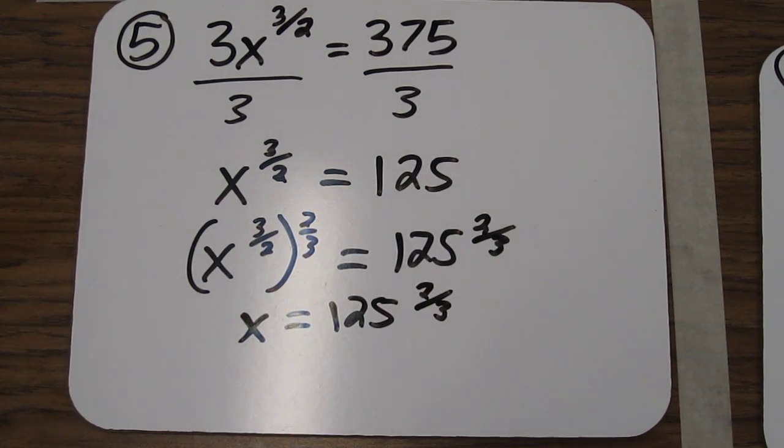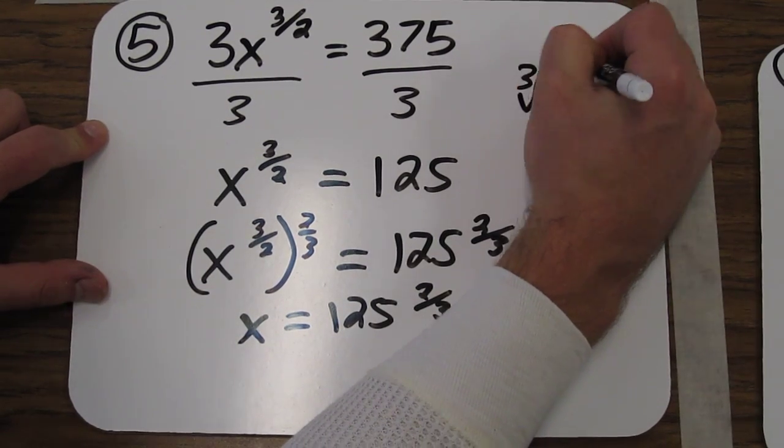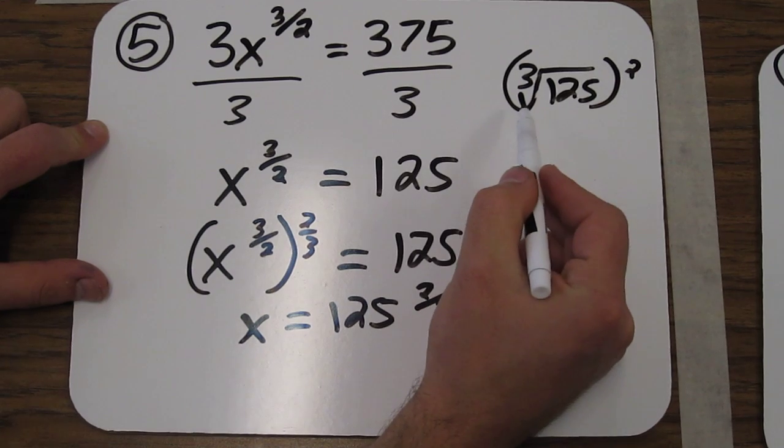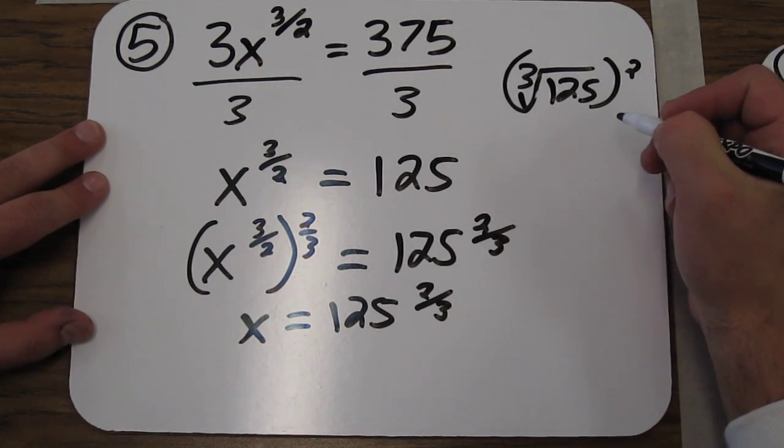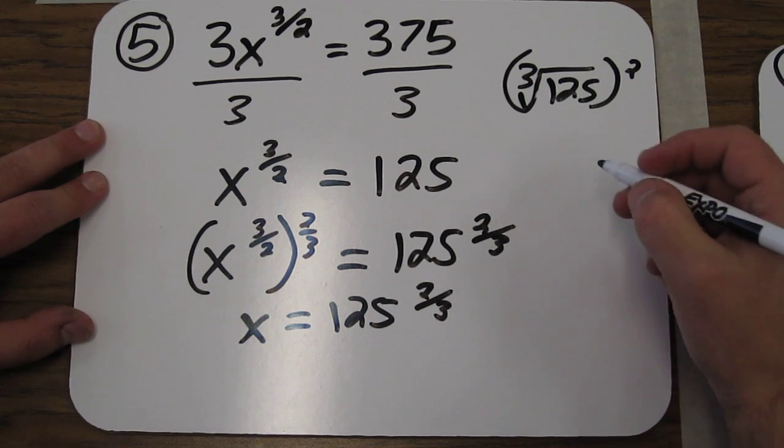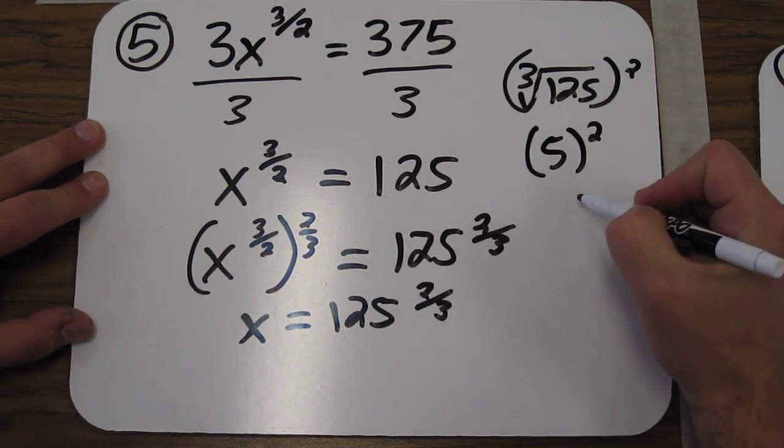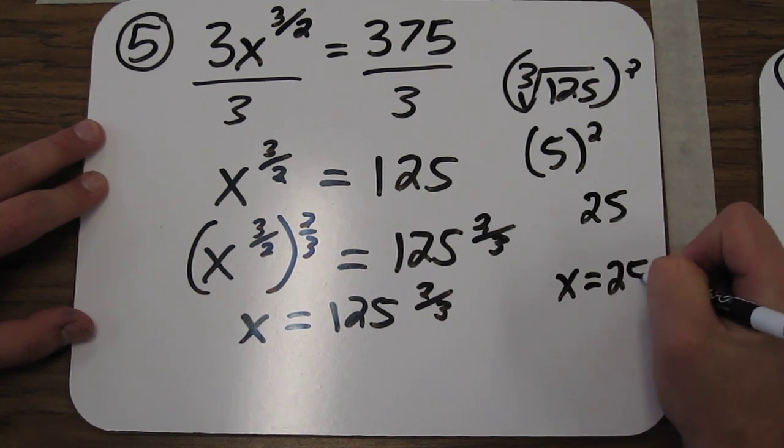And our challenge is figuring out what is 125 to the 2/3. Using the properties of exponents, we can rewrite 125 to the 2/3 as the cube root of 125 squared. The cube root of 125 is 5. 5 squared is 25. So we end up with x equals 25.